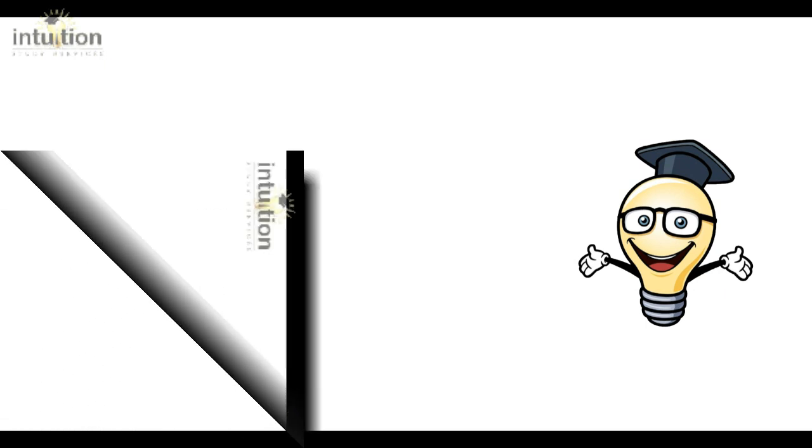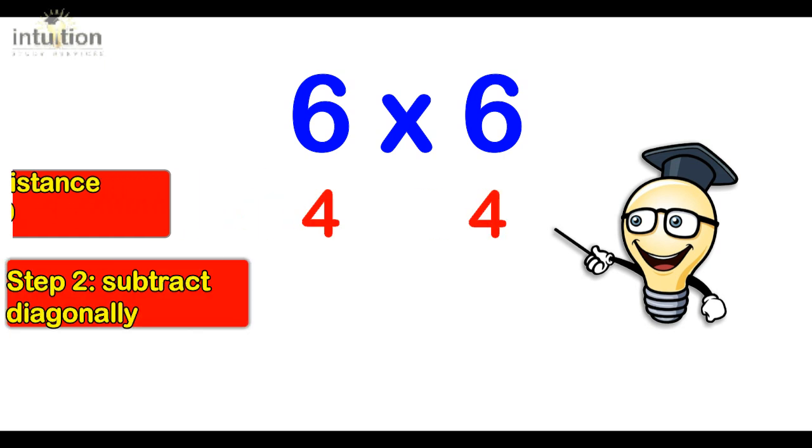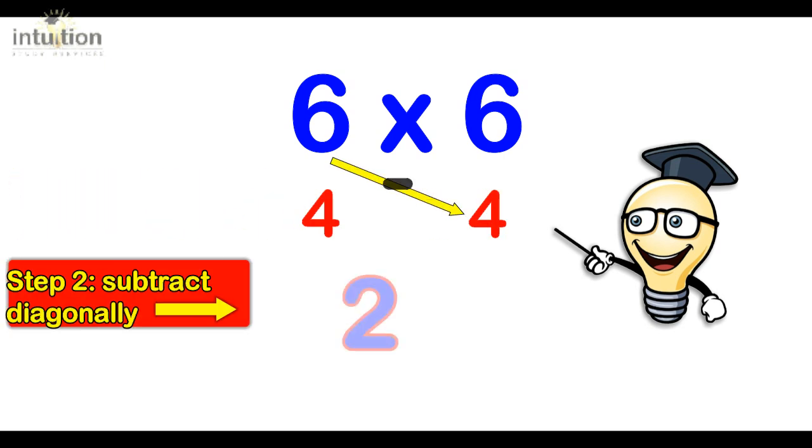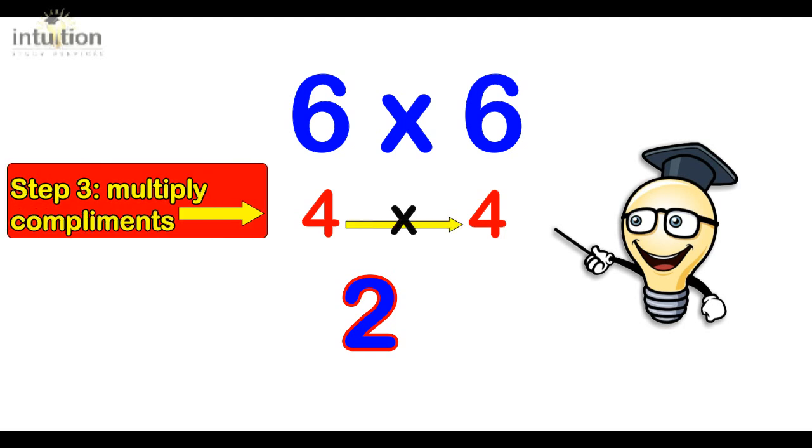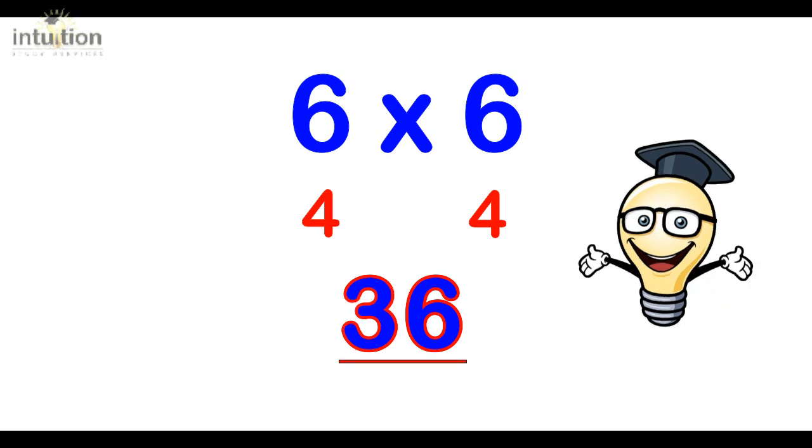Okay, so let's have a look at one final example just so that we have fully understood the method. So let's consider 6 times 6. So step 1 is we find out how far each number is away from 10. So 6 is 4 away from 10, same with the other 6. Then we subtract diagonally. So 6 take away 4 is 2, and then we multiply the bottom numbers. So 4 times 4 is 16. Now since we have a two-digit number, that 1 gets carried and gets added to the 2. So the final answer is 36.